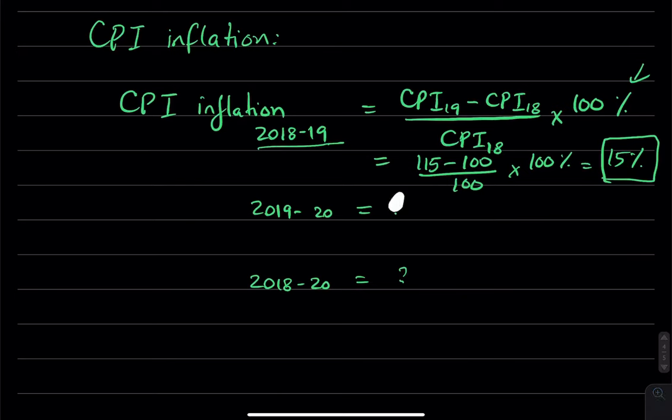Similarly, you can calculate the inflation rate between 2019 and 2020, which is 130 minus 115, divided by 115, times 100 percent, which equals 13 percent.